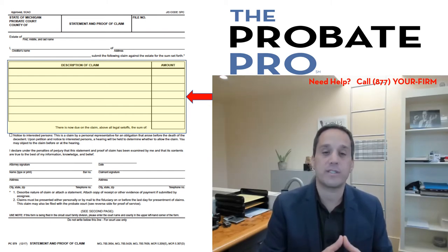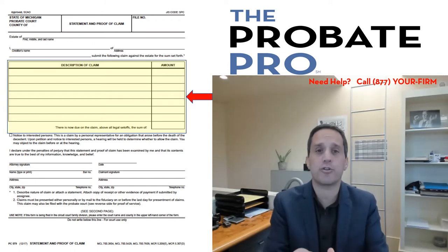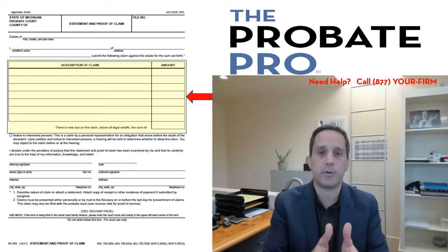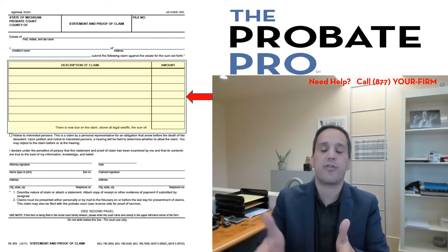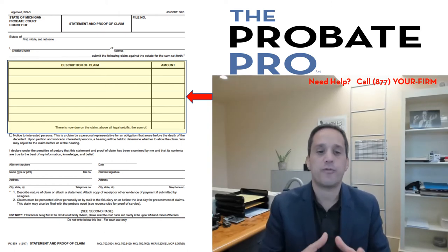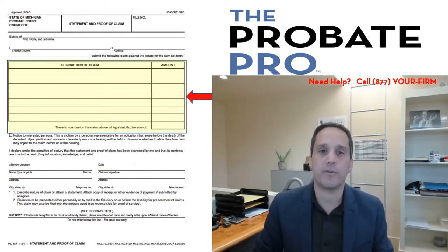That deadline is within the notice of known creditors being provided to you, or within the publication period, or if they overlap, within 30 days of the publication. For further clarification on the timeline upon which you must file a creditor claim, please carefully review Michigan's statute and court rule.